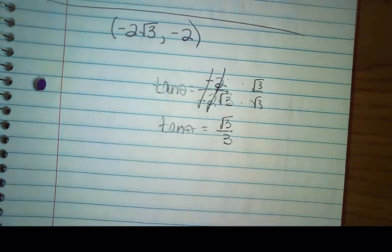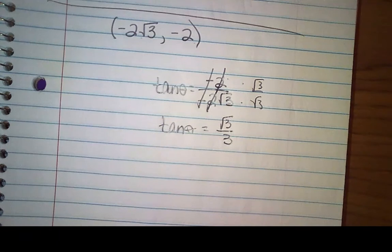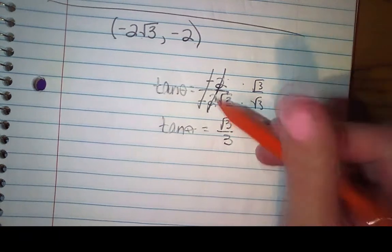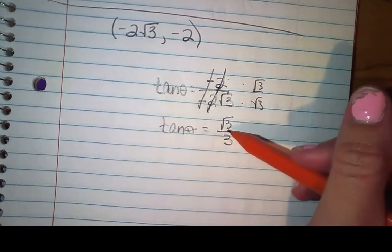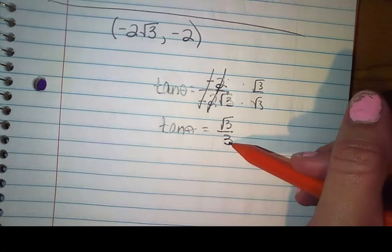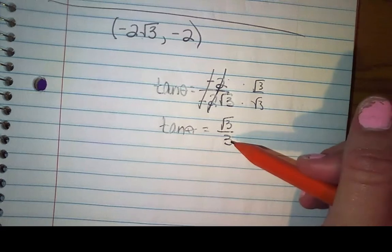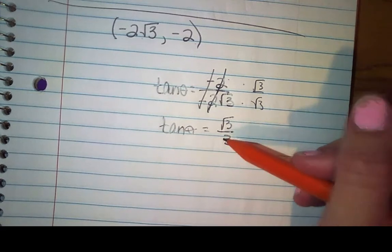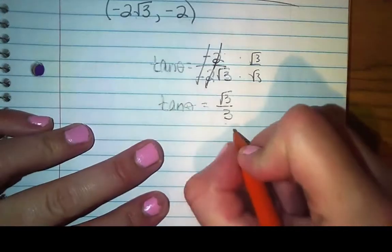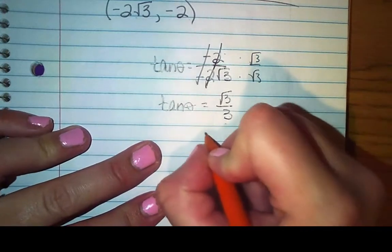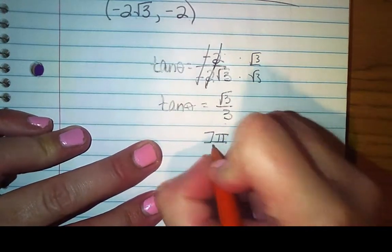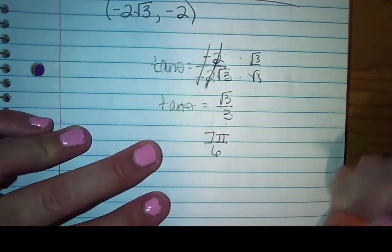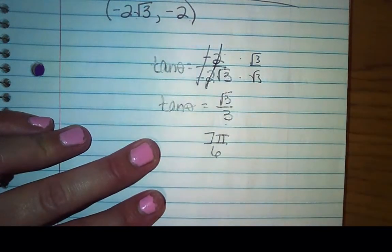So where on the unit circle does tangent have a positive ratio of √3 over 3? It's going to happen in quadrant 1 and in quadrant 3. Since our point is in quadrant 3, that's going to be at 7π over 6.